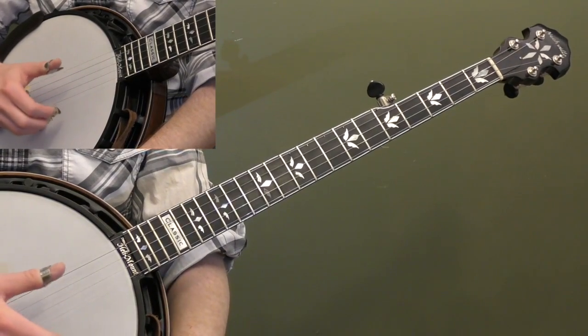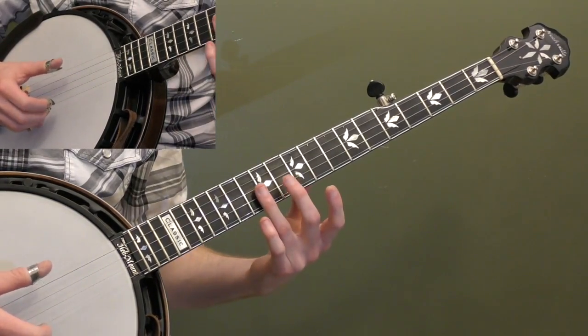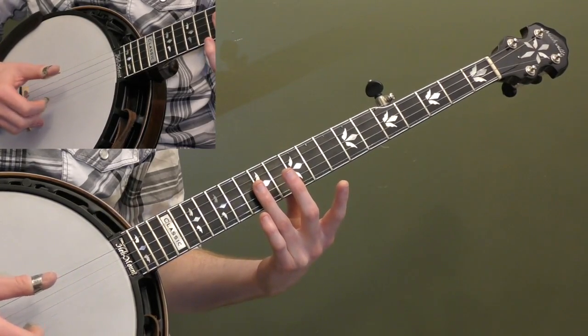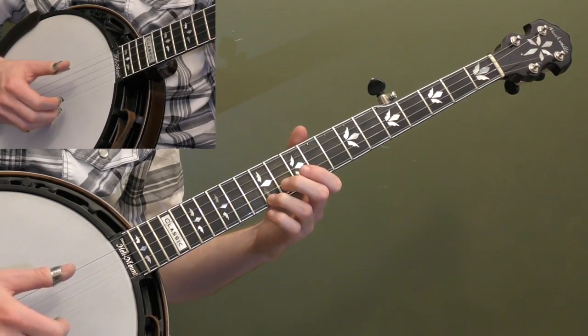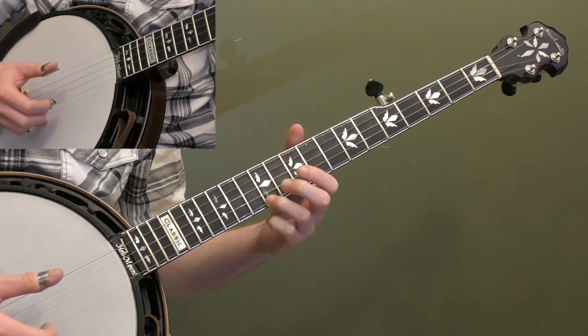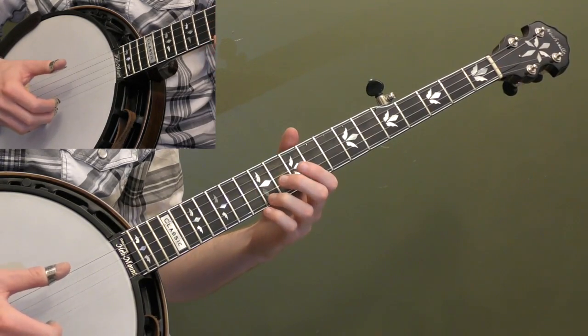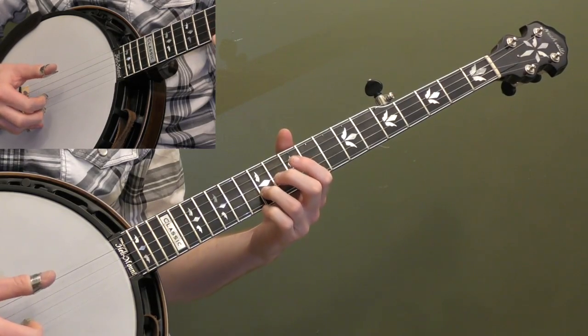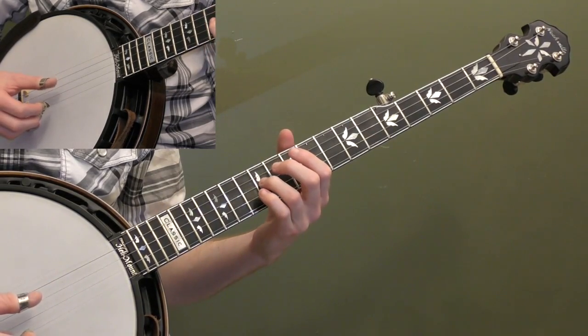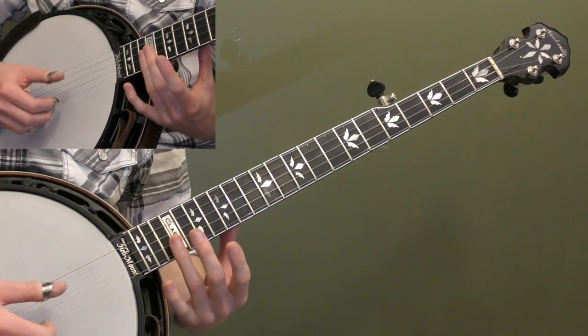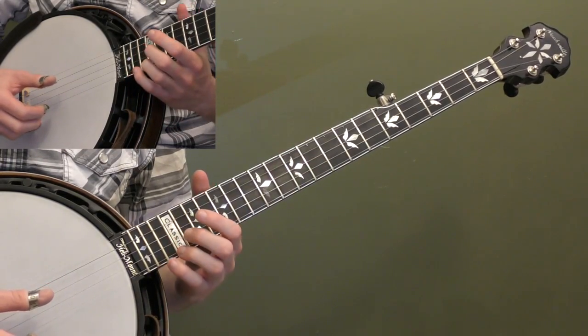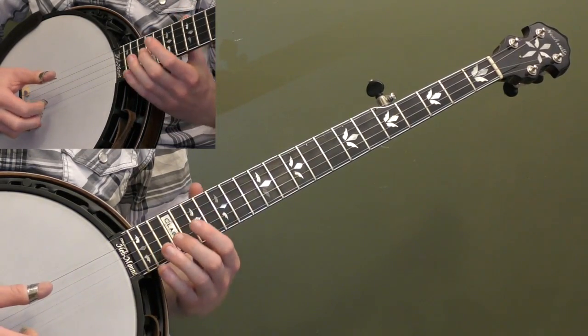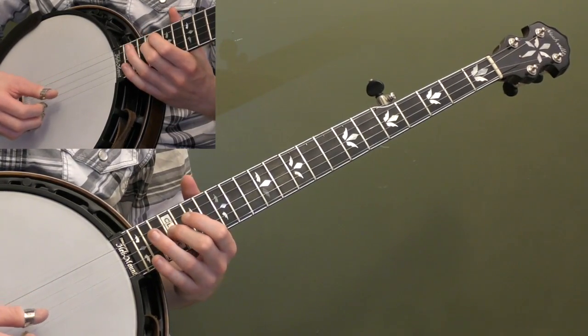So, the way you can check that is with harmonics. You basically do a harmonic at the 12th fret, and then you play the fretted note. And those should be the same. If they're not, then your intonation is off. You can do it at the 19th fret too. It's a good way to tune your banjo as well.